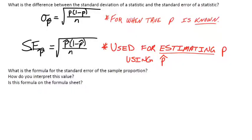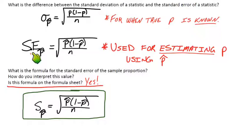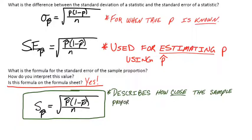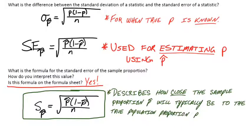So is the standard error formula on the formula sheet? Turns out it actually is now on the new AP formula sheet, and it looks the same except for instead of capital SE for standard error, it just has lowercase s with a p-hat subscript. So this is how it appears on our formula sheet. And then how exactly would you interpret this value? So in green here, the standard error of p-hat describes how close the sample proportion p-hat will typically be from the true population proportion p. And since we're talking about the sampling distribution approach, that would be from many repeated samples of the same size. So how close our sample proportion p-hat will typically be to the true population proportion p in repeated SRSs of the same size n.